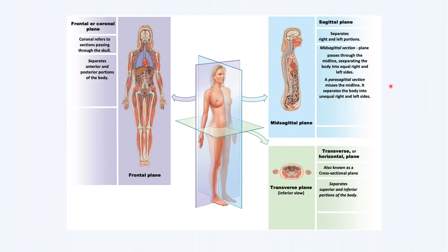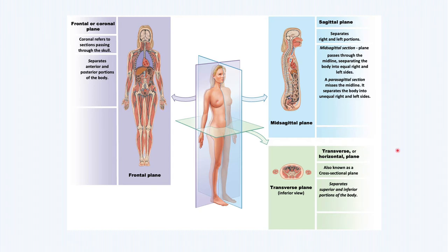Under the parasagittal section, we also divide the body into right and left; however, we're going to miss the midline, and it's going to separate the body into unequal right and unequal left.